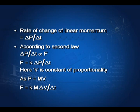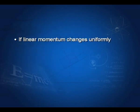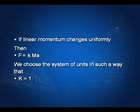Since P equals mv, substituting the value of P we get f = k·m·Δv/Δt. If linear momentum changes uniformly, then f equals k·m·a, where a is acceleration. If we choose the system of units such that k equals 1, then f equals m into a.